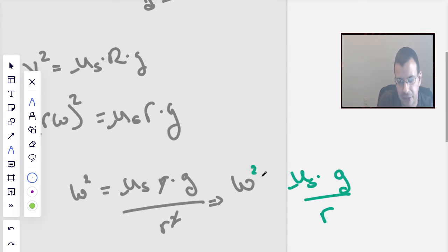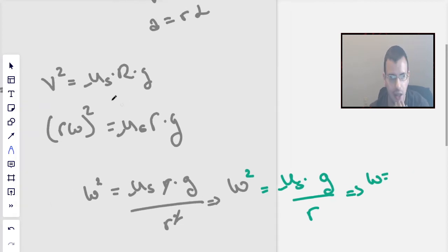And I'll say, I'll leave this as ω², just because I don't like drawing, I don't like writing square root symbols. It's a personal animosity of mine.